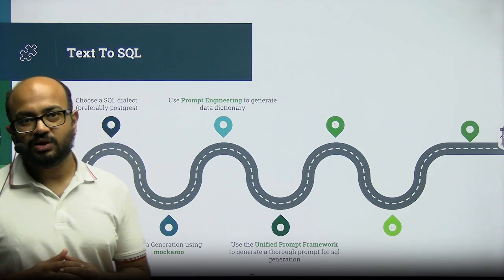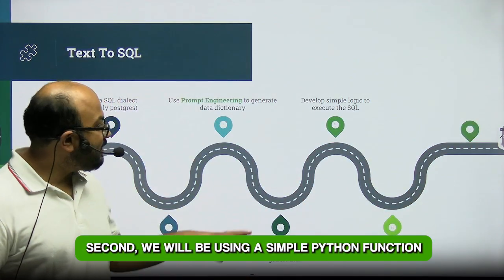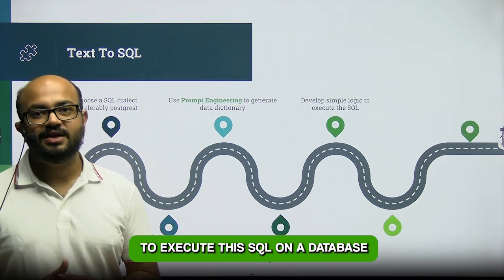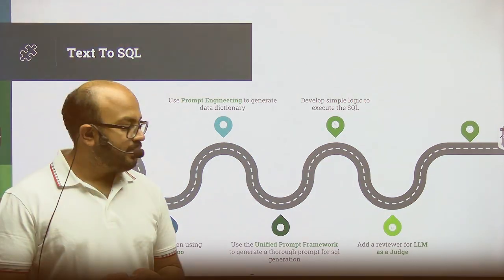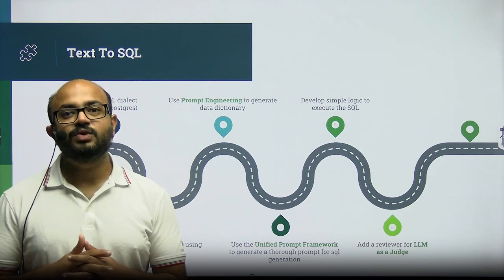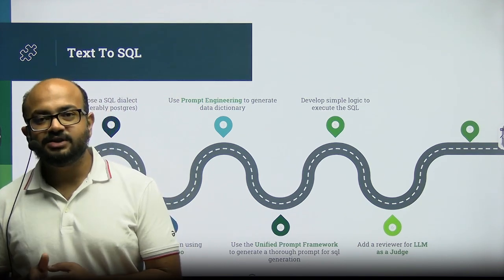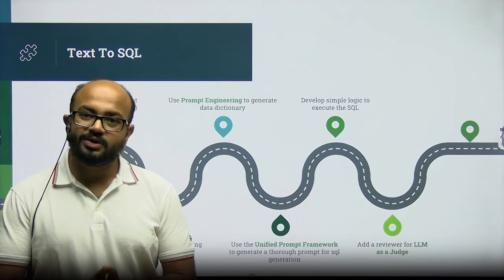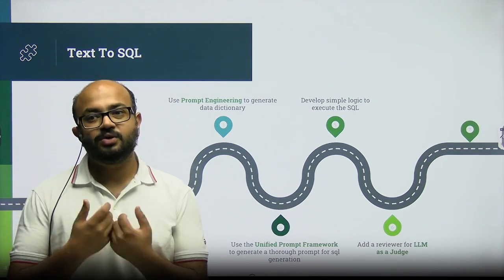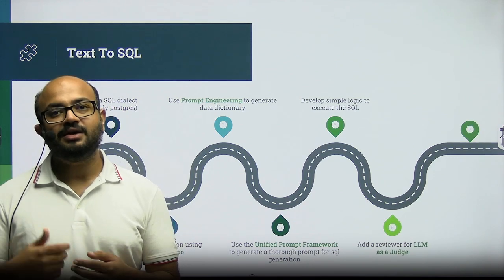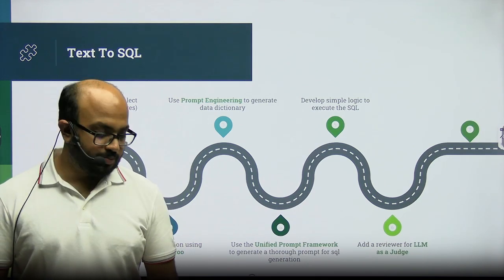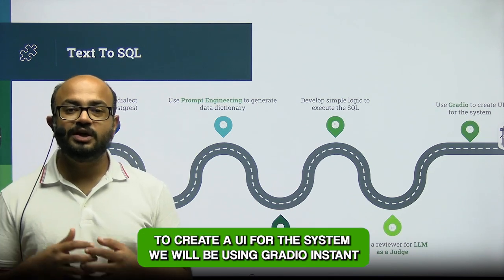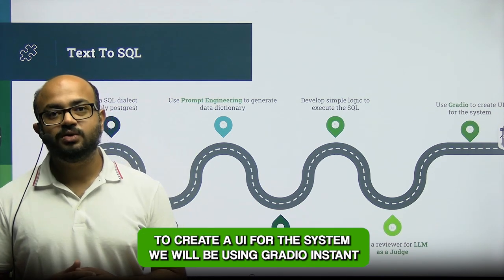We will be talking about the Unified Prompt Framework in more detail in an article. We will also be using a simple Python function to execute the generated SQL on a database. Then finally, we will be adding a reviewer LLM as a judge to ensure that our output is correct. If the output is incorrect, we can either put a retry decorator or simply indicate that we were not able to get the output. To create a UI for this system, we will be using Gradio.